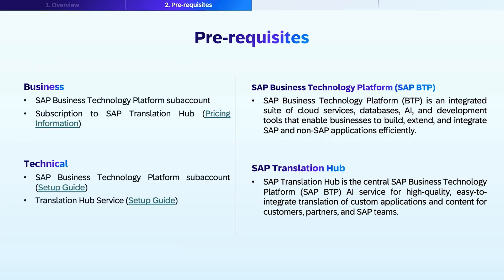Before implementing, let's cover the prerequisites needed on SAP Business Technology Platform. You'll need an SAP BTP subaccount and a subscription to SAP TranslationHub service. Pricing information on all these services is available and linked to resources for more context. SAP BTP is an integrated suite of cloud services, databases, AI, and development tools that enable businesses to build, extend, and integrate SAP and non-SAP applications efficiently. By setting up these prerequisites, you'll establish a foundation for translation of your text, documents, and software.